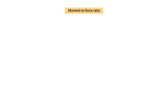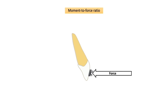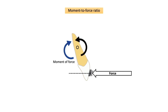The moment-to-force ratio (M/F ratio) is the ratio of the counter-balancing moment produced to the net force applied to a tooth. This counter-balancing moment is created in the direction opposite to the movement of force. The location of the center of rotation depends on the M/F ratio — not on the absolute value of either alone.